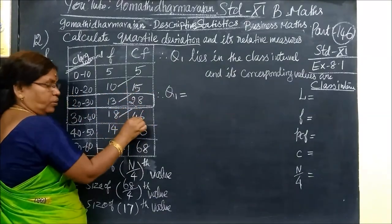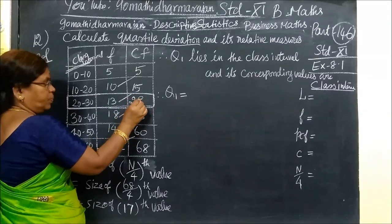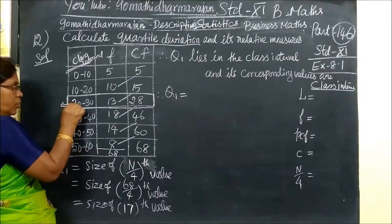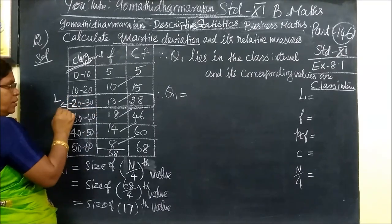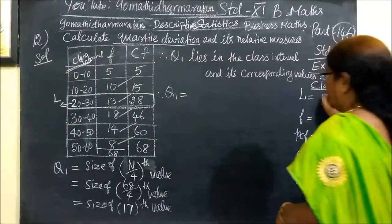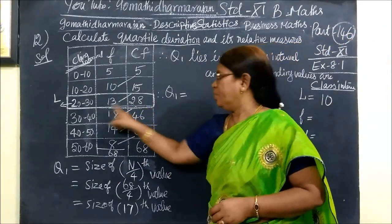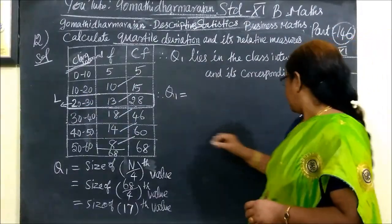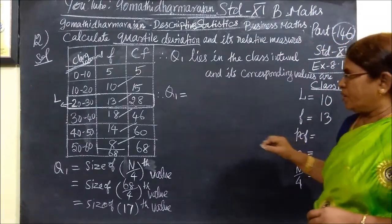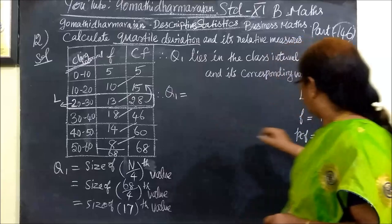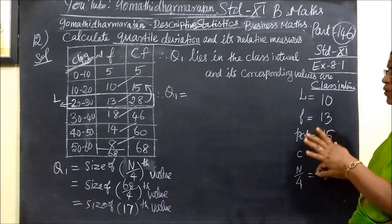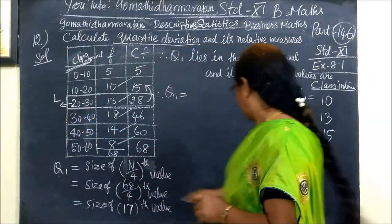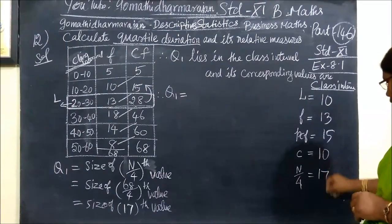This is the class interval we need. For this calculation, the lower class limit L is 10, the frequency f is 13, PCF (previous cumulative frequency) is 15, and the class width C is 10.